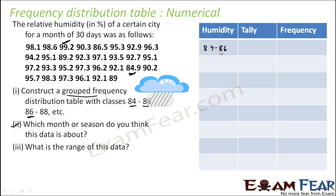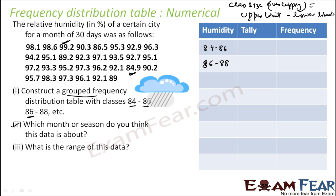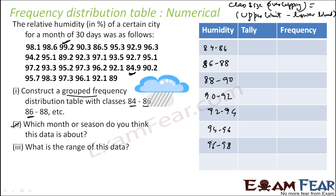The first class is 84 to 86, next is 86 to 88, and the class size is 2. For overlapping classes, we find the class size as upper limit minus lower limit. Assuming the same class size throughout, the classes are: 84–86, 86–88, 88–90, 90–92, 92–94, 94–96, 96–98, and 98–100. This covers all data up to the maximum of 99.2.